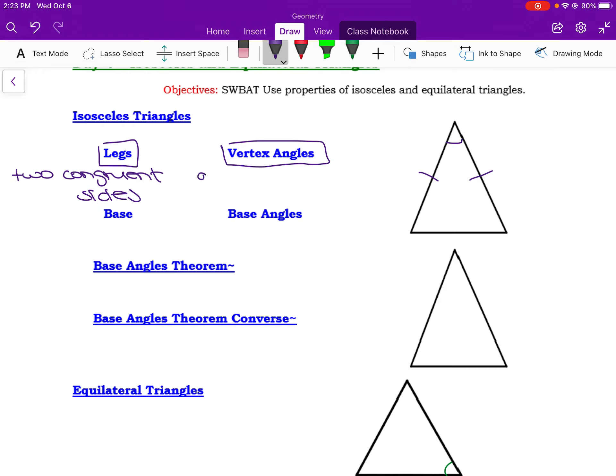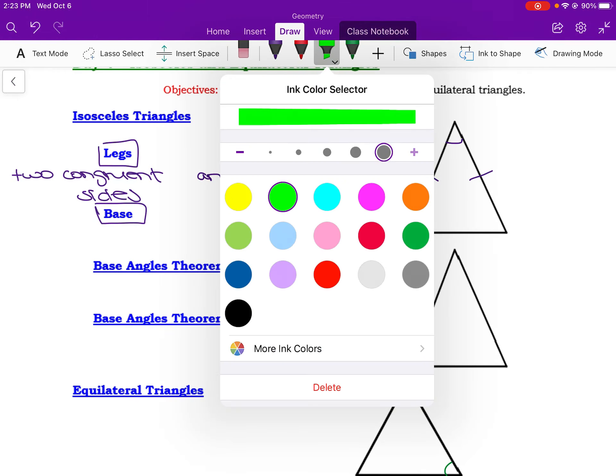Okay, the vertex angle is the angle between the legs. So this is the angle between the legs. So we have those two pieces.